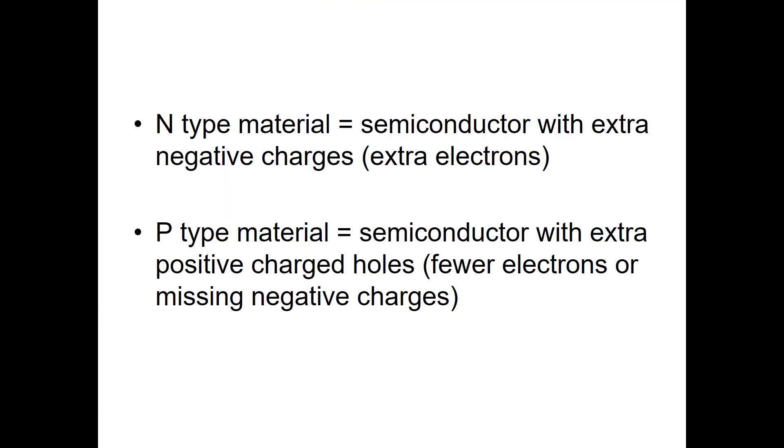Physicists and engineers refer to these materials as N-type. N stands for negative because electrons have a negative charge. It's any semiconductor with extra negative charges or extra electrons. They name an N-type material. A P-type material has fewer electrons, or we could consider it as having extra holes, missing negative charges. So it's actually more positive. So P for positive.